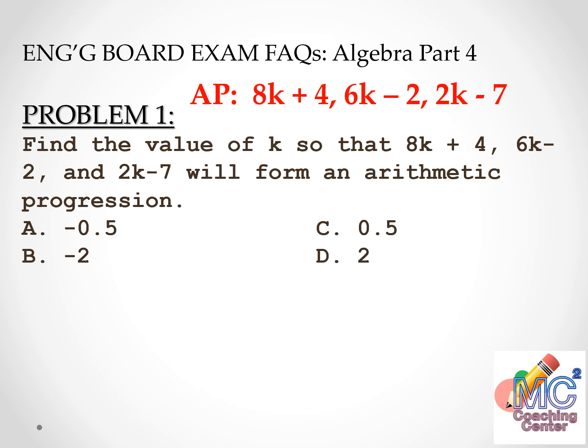Instead of using the formula for arithmetic progression that we learned before, what we'll do in this problem is to reverse. What I mean by 'reverse' is we substitute these values into the given arithmetic progression, and whichever one forms an arithmetic progression is the correct answer. Let's try letter A, where k is negative 0.5 — substitute it into all three terms.